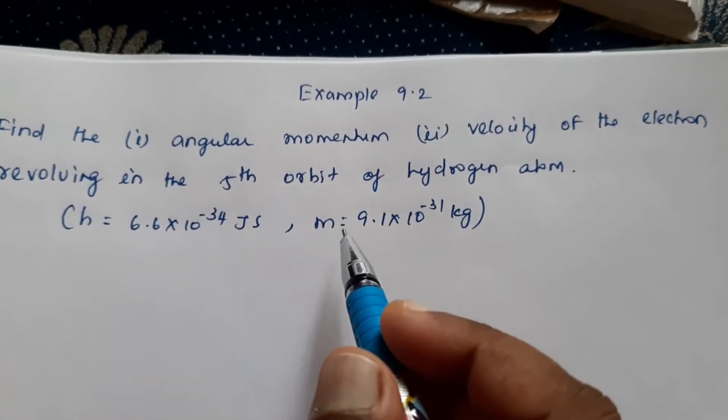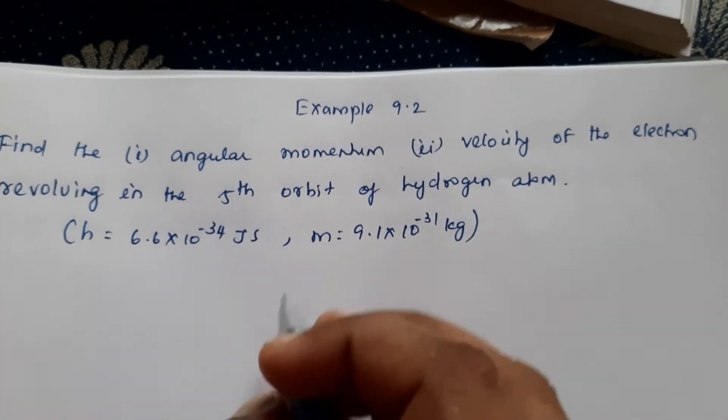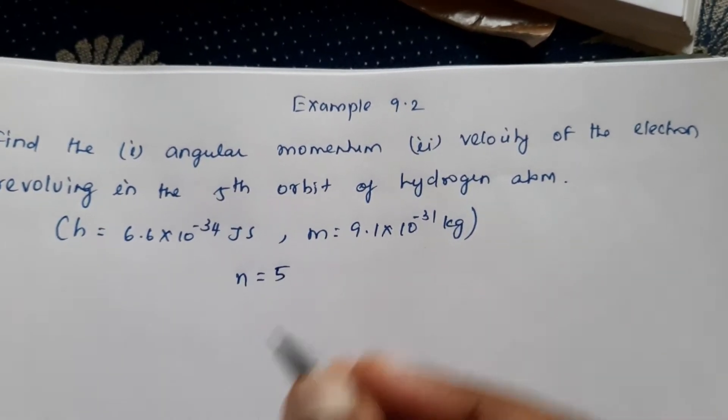So H is your Planck's constant, M is the mass of the electrons and N is given as what? 5th orbit.